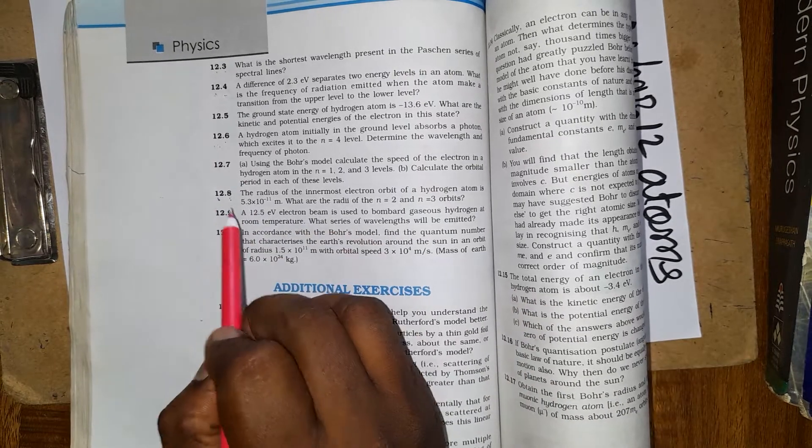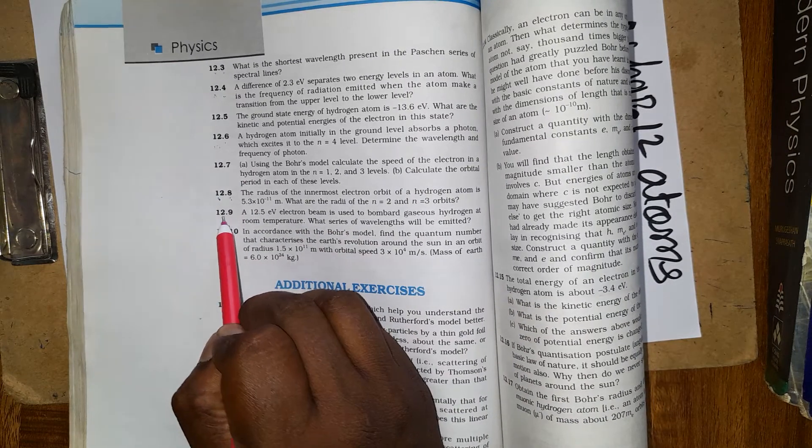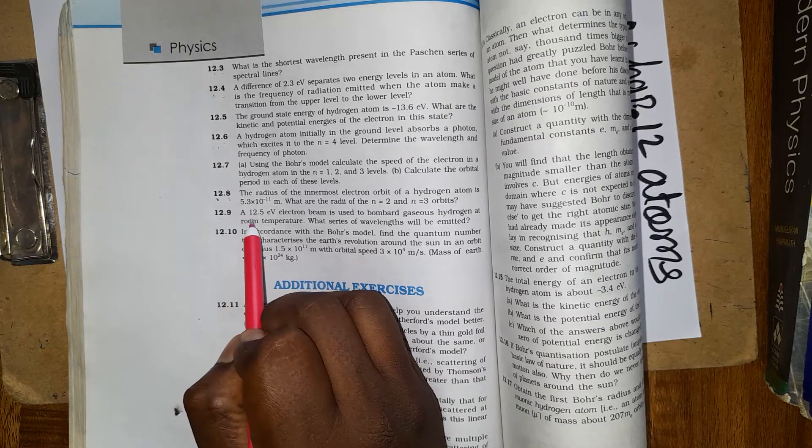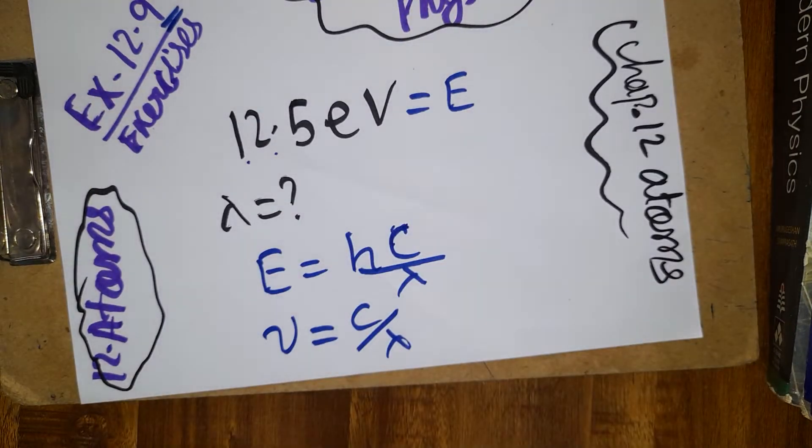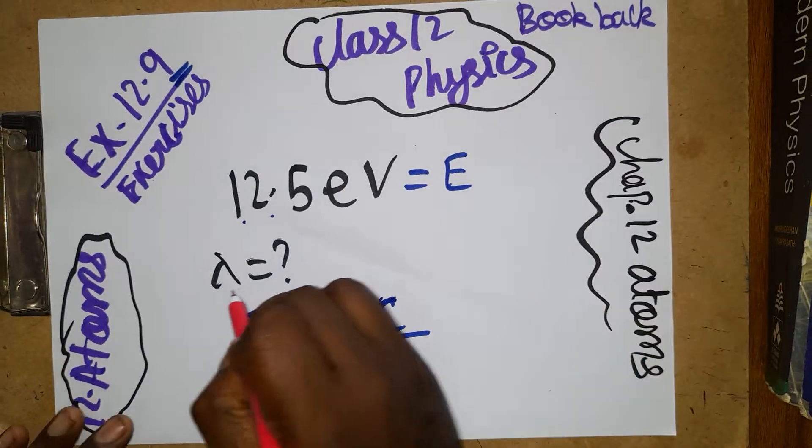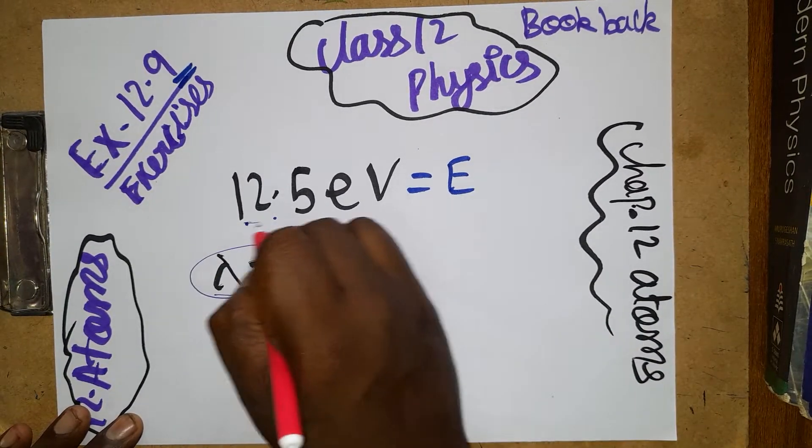Hello student, today we are going to discuss class 12 physics NCERT exercise problem, chapter 9, problem 12. The question is given as 12.5 eV and we are going to calculate the wavelength. It is a book back class 12 physics problem. They asked about the wavelength and given 12.5 eV.